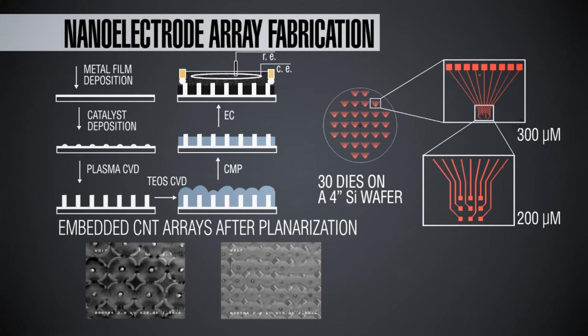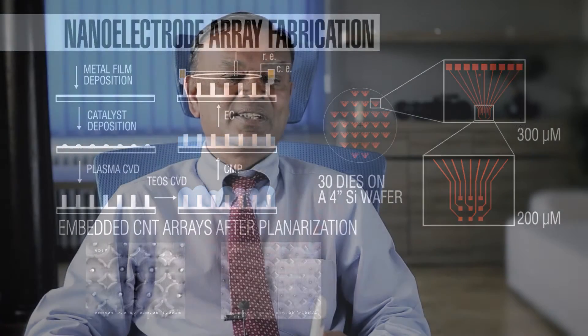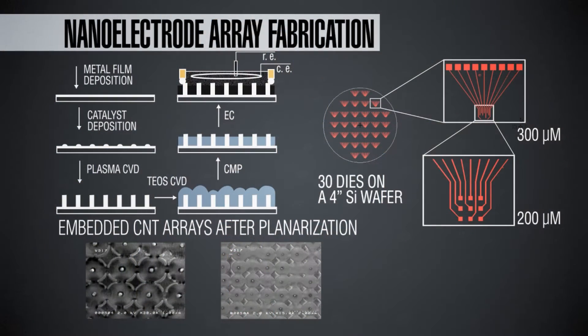Typically the growth temperature is around 500 to 600 degrees centigrade, and the pressure is a low pressure of 1 to 10 Torr — not atmospheric pressure. Under these conditions, the plasma chemical vapor deposition allows you to grow the carbon nanofibers as individual freestanding nanostructures.